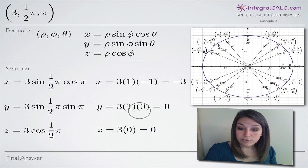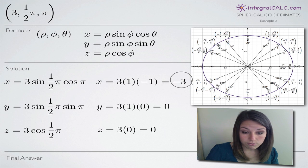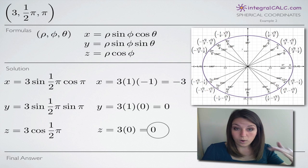So that's how we use the unit circle to grab these values and now it's just really easy simplification. 3 times 1 times negative 1 gives us negative 3. 3 times 1 times 0 gives us 0. And 3 times 0 gives us 0 for x, y and z respectively.